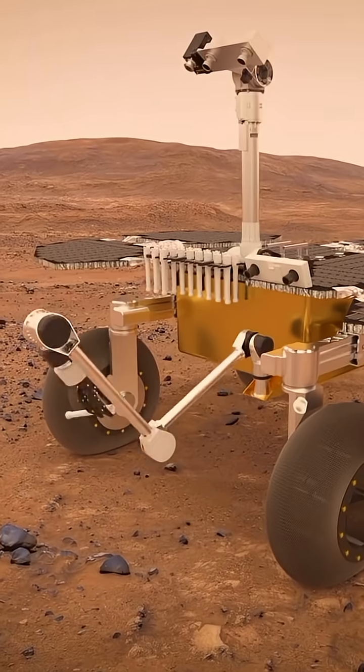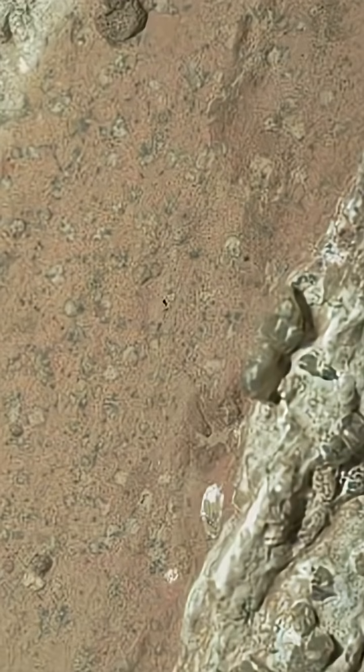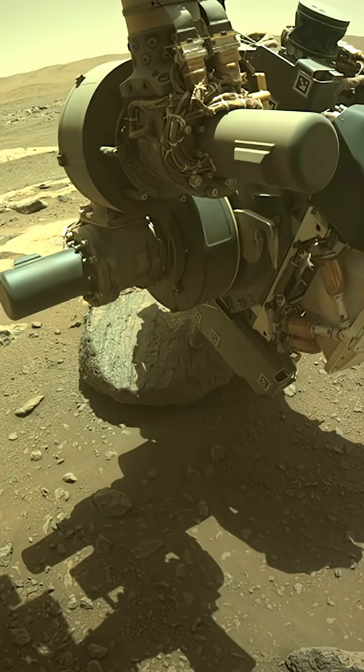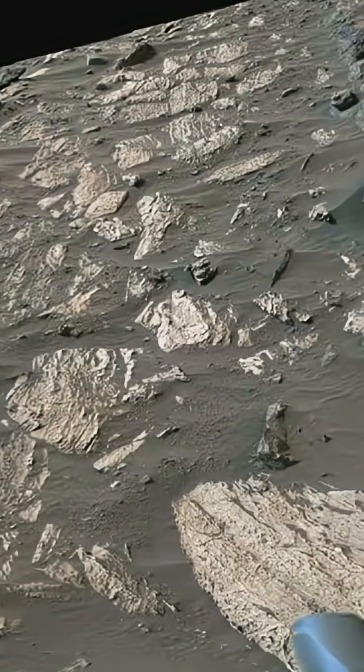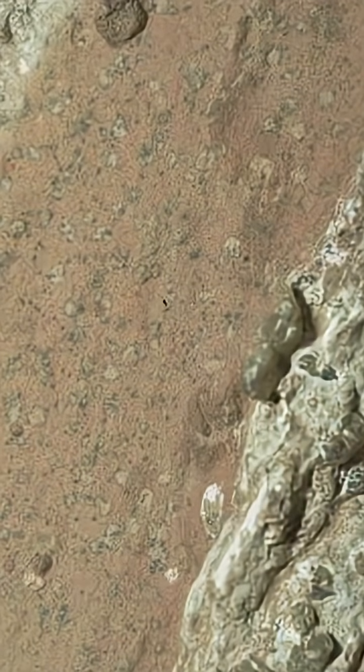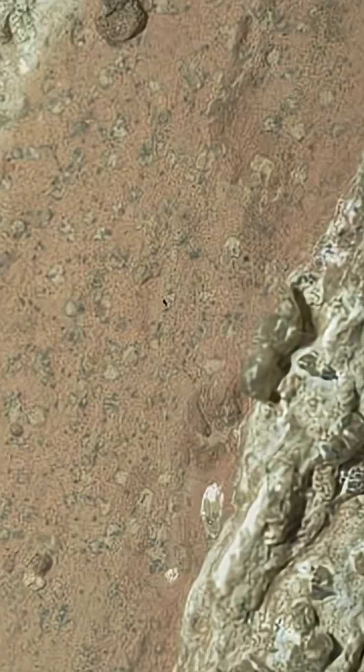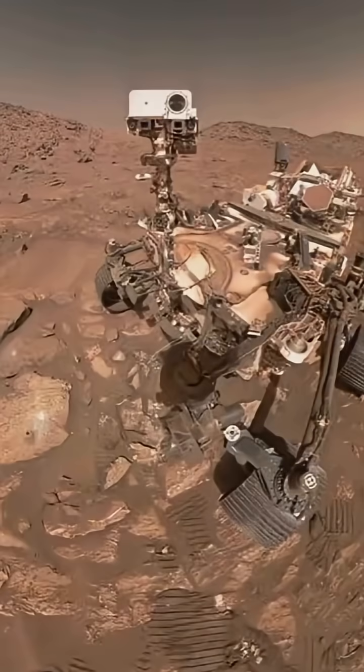So last July, NASA's Perseverance rover found a leopard-spotted rock. They've done the analysis on these leopard spots, and we think they are potentially made by some sort of ancient life.